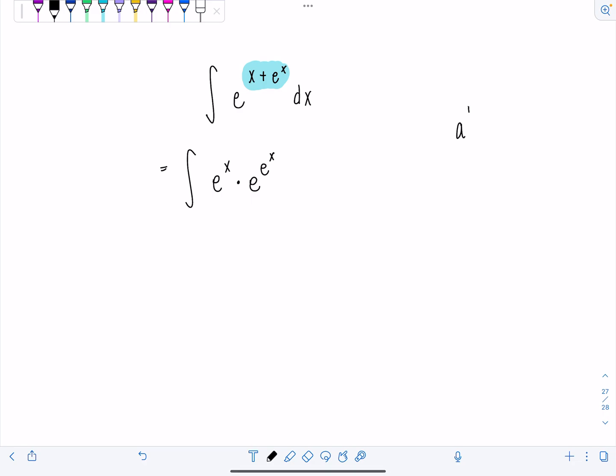So remember, if you have a to the m times a to the n, you can write that as a to the m plus n. Well, basically, we're just going backwards. Yes? Fabulous. Don't forget that dx.